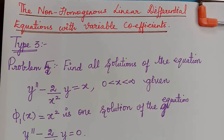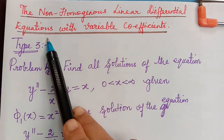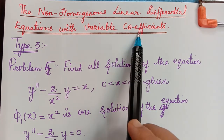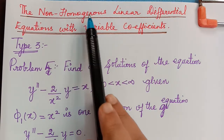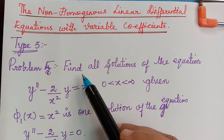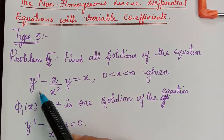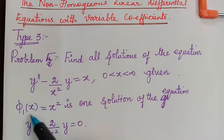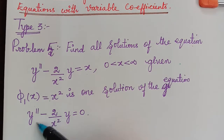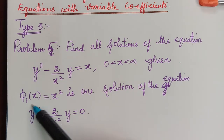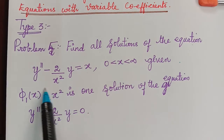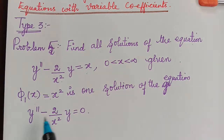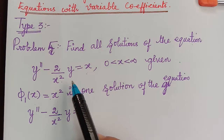Dear students, the next topic is non-homogeneous linear differential equations with variable coefficients. Previously, we learnt about linear differential equations with variable coefficients which were homogeneous. Now we are going to learn about the non-homogeneous equations. The problem says: find all solutions of the equation y'' - (2/x²)y = x, where x lies between 0 and infinity, given that φ₁(x) = x² is one solution of the homogeneous equation. Since the right-hand side is x, this is a non-homogeneous equation. We must find the homogeneous solution and also a particular solution and add them together.